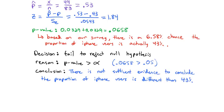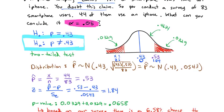One thing you might notice is there are a couple of p's in problems like these, and it's very important to keep them straight. We have a p-value — just the probability the null hypothesis is true. We have a p in the null hypothesis — that's the claim for the population proportion. And we have p-hat — the sample proportion. Be very careful not to get the three p's mixed up. Quite often students compare the wrong p to alpha and make the wrong conclusion. Make sure you compare the p-value to alpha to make a conclusion about your p based on your p-hat.